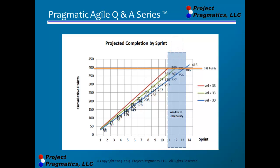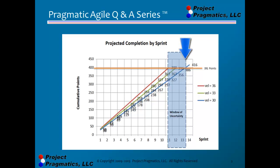Now let's say the team speeds up — add a 10% bonus to their speed — and they'll have a velocity of 36. That would be the red line, which finishes earlier at sprint 11. A team that slows down for whatever reason, say to the velocity of 30 — 10% less than their current velocity — would stretch out the project to between sprint 13 and 14.